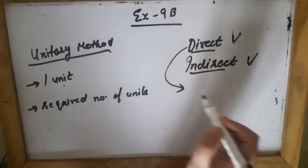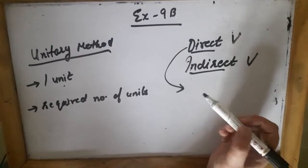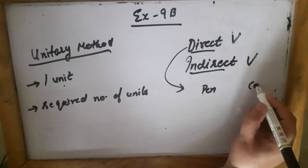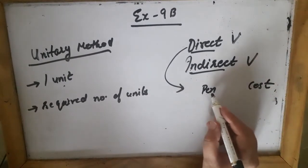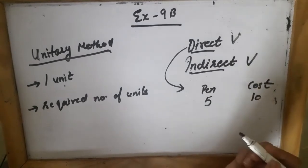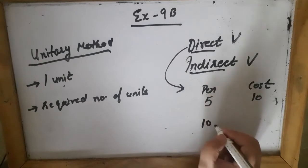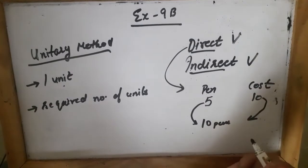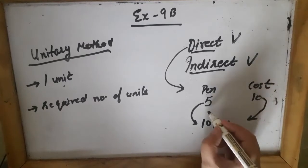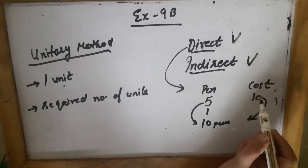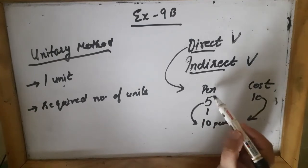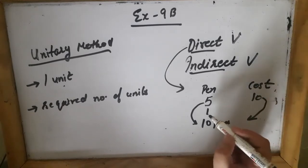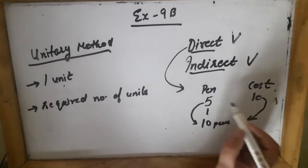In the last lecture we did the direct proportion. In direct proportion, suppose you have to buy some pens. Suppose you are going to buy five pens and the cost of five pens is 10 rupees. Now if you want 10 pens, if the number of pens has increased, their cost also will increase. To find about 10 pens, first I will find the cost of one pen. If the number of pens is decreased, the cost also will decrease. Five pens cost is 10 rupees, so one pen cost will be 10 divided by 5, which is 2 rupees.